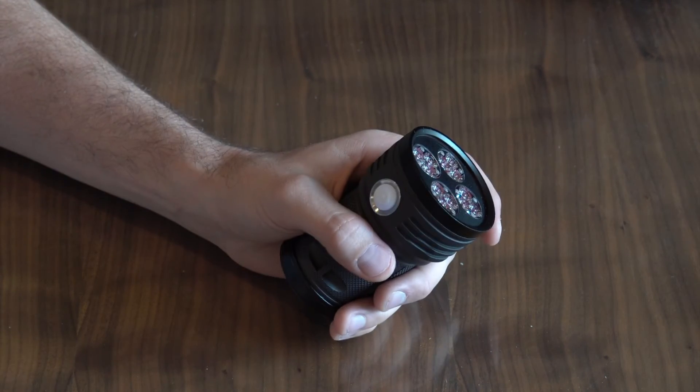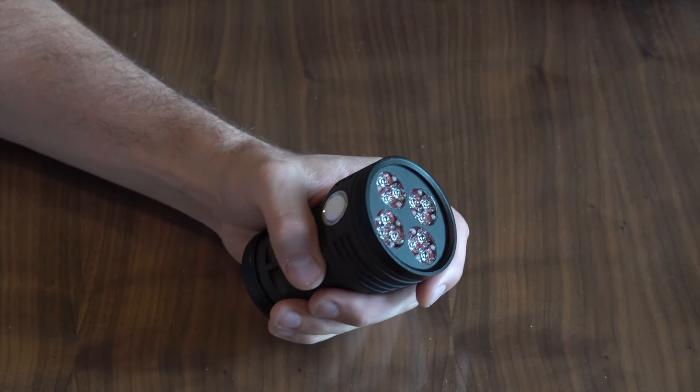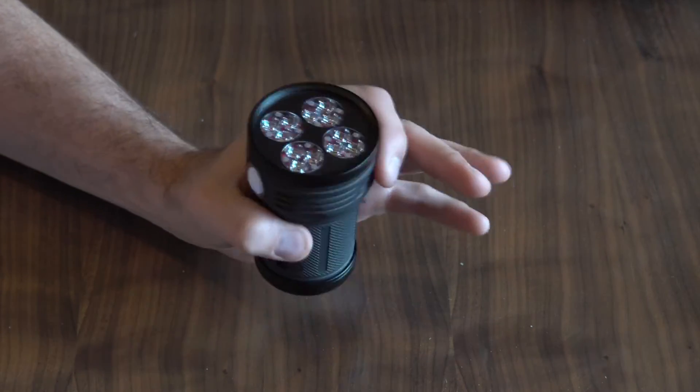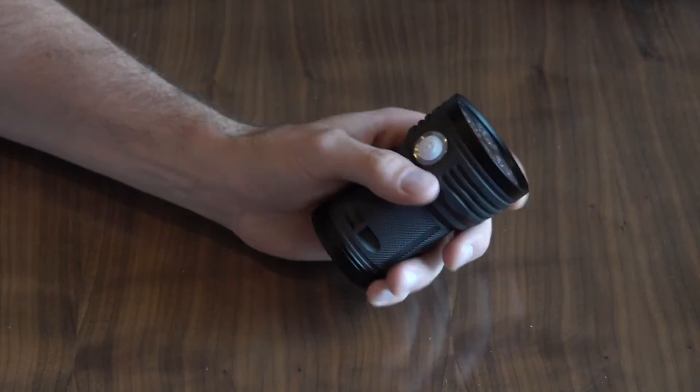So to get into this user interface, we're going to give eleven clicks and then hold, and then the light will blink three times to confirm that it's entered into the advanced user interface.